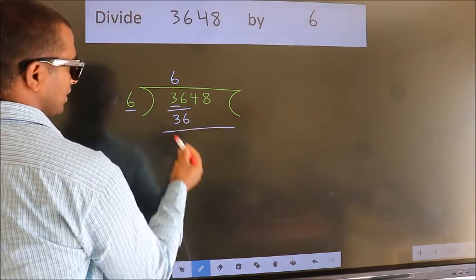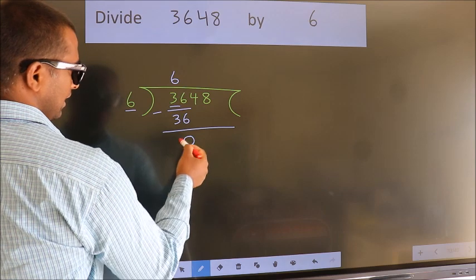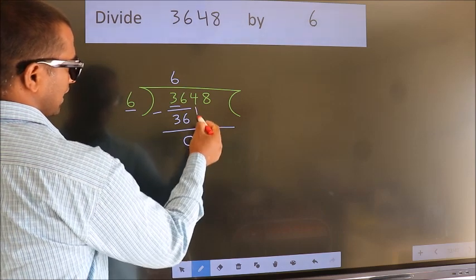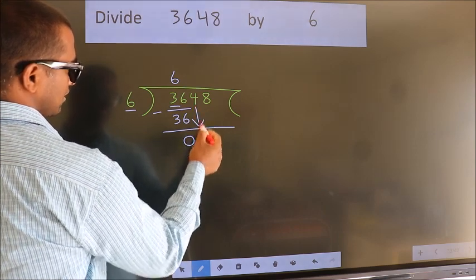Now we should subtract. We get 0. After this, bring down the beside number. So, 4 down.